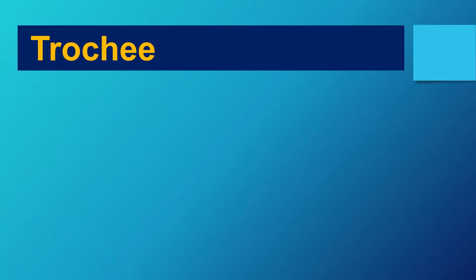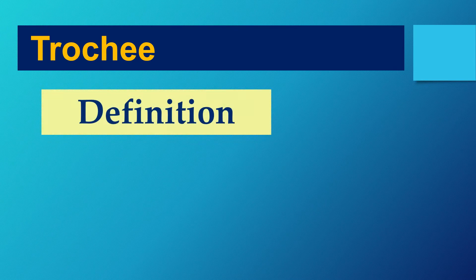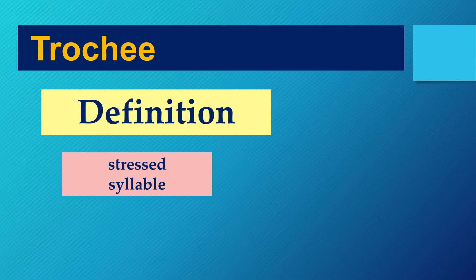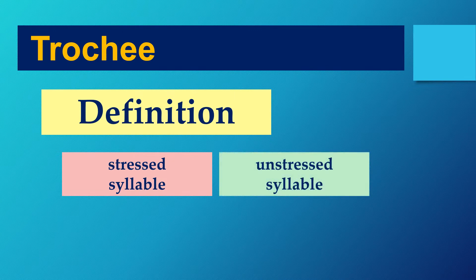Now check out what a trochee is. It's a stressed syllable followed by an unstressed syllable, so this is the opposite or the inverse of an iamb — stressed syllable, unstressed syllable.